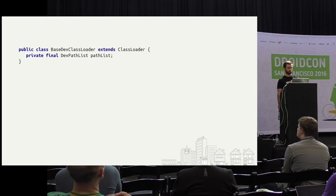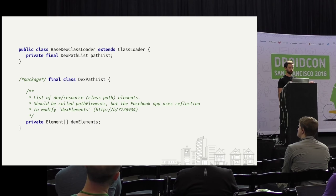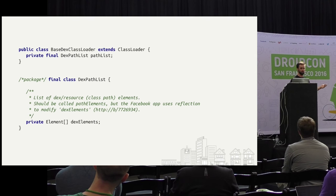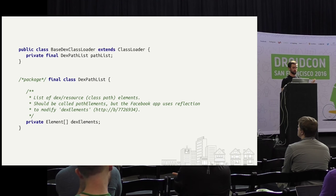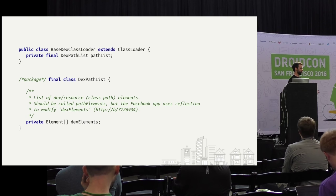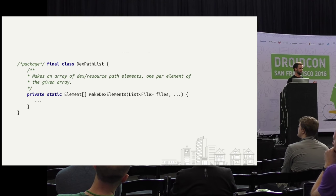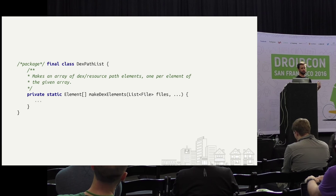This dex path list class has a list of elements representing dex files. One of my favorite comments: they tried to rename this variable but it broke the Facebook app, so they actually reverted it. What we're trying to do overall is add entries to this array, but the dex path list is final, the elements field is private, and the class loader has a private final dex path list. So in the Multidex support code, you'll see a lot of reflection to make all this happen. The way you make new element arrays — the element class is just a wrapper around dex files — is you call this method makeDexElements, which is essentially a wrapper around doing things like dex optimization.